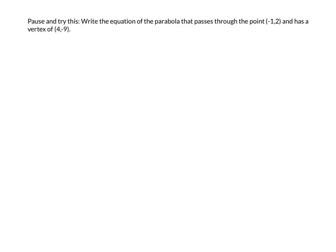Here's a problem with a little bit less context. Write the equation of a parabola that passes through the point (negative 1, 2) and has a vertex of (4, negative 9). At this point you need to pause this video, do the problem, then unpause it and watch how I do it to see if you got the same answer.